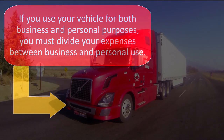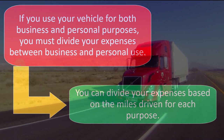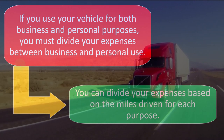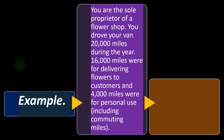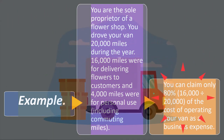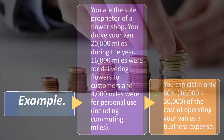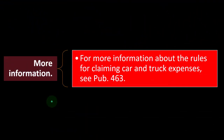If you use your vehicle for both business and personal purposes, you must divide your expenses between business and personal use. You can divide expenses based on the miles driven for each purpose — this is what QuickBooks is basically helping us to do, allocating miles to business or personal. Example: you are the sole proprietor of a flower shop. You drove your van 20,000 miles during the year — 16,000 miles were for delivering flowers to customers and 4,000 miles were for personal use, including commuting miles. You can claim only 80% (16,000 over 20,000) of the cost of operating your van as a business expense. If using the actual write-off method including depreciation, you'd limit it to 80%. If using the mileage method, you would use only the business miles. For more information about the rules for claiming car and truck expenses, see Publication 463 on the IRS website.